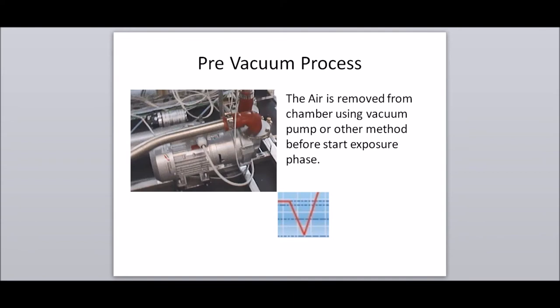Pre-vacuum process: air is removed from the chamber using a vacuum pump or other method before the start of the exposure phase. This method is particularly suited to load items that can trap air, like tubing, pipes, machine parts, and filters.